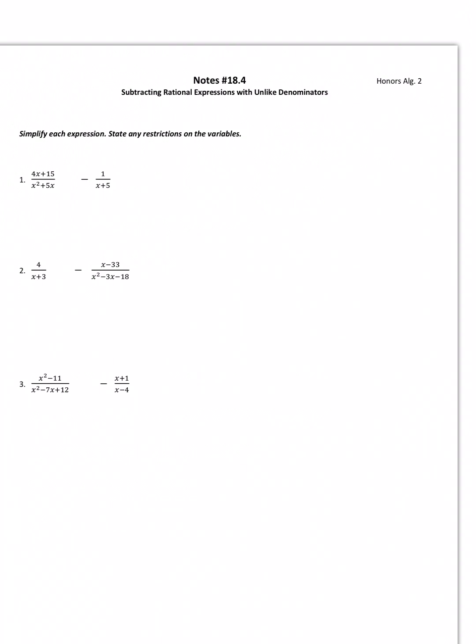Let's think through this for a moment. Let's look at number one. Same instructions we've done before. Simplify each expression and state any restrictions on the variables. Remember we always want to start by factoring completely everything we can. The top doesn't factor on number one, but the bottom, there is a GCF of x.